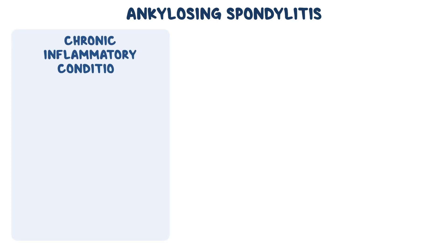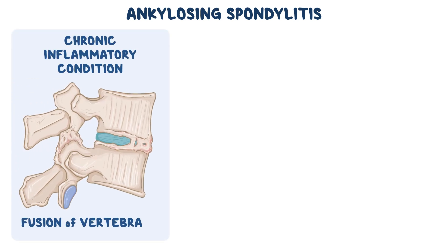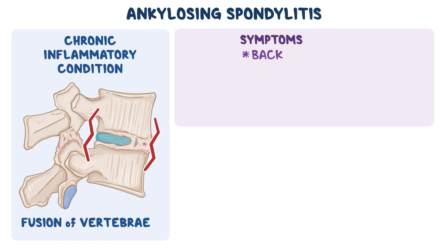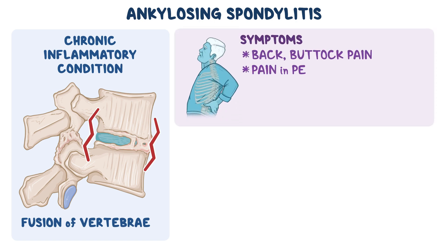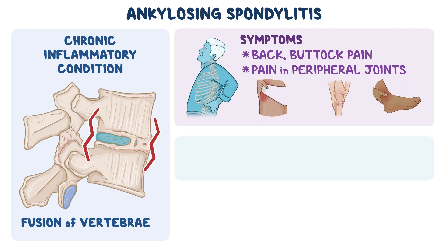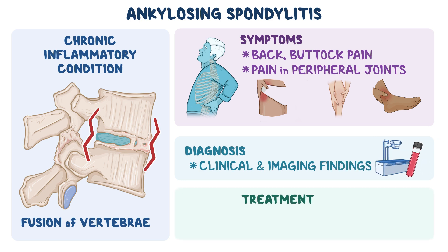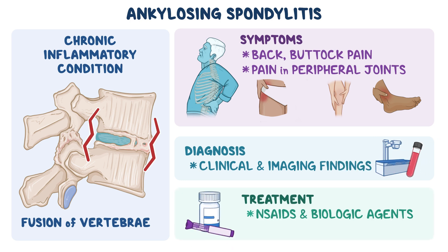As a quick recap, ankylosing spondylitis is a chronic inflammatory condition that can lead to fusion of the vertebrae, resulting in a rigid spine. Some of the symptoms seen in AS include back pain, buttock pain, and pain in the peripheral joints such as the hips, knees, and ankles. Diagnosis is based on a combination of clinical and imaging findings, and treatment involves anti-inflammatory medications, biologic agents, and maintaining a regular exercise routine.